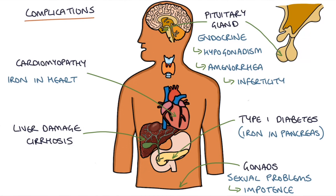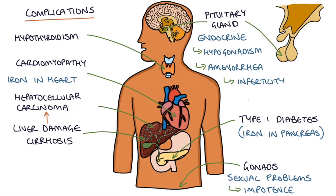Hemochromatosis can cause hypothyroidism, where iron deposited in the thyroid gland prevents it from producing adequate hormones. Liver cirrhosis can lead on to hepatocellular carcinoma — cancer of the liver. Iron overload can also lead to chondrocalcinosis, which is calcium deposits in the joints, resulting in arthritis.